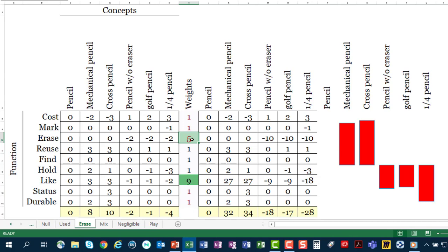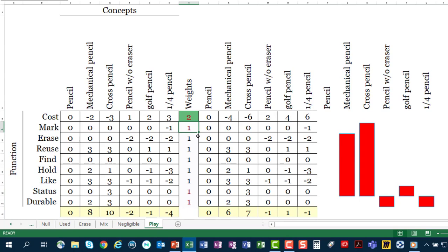But if we favor erase, we say, okay, erase is going to be a five. And I also want to like it. Well, that absolutely sends these three to the bottom because they don't have an eraser. So, that's pretty straightforward. Or let's say I want to play with these. So, I started with all the same except for cost. Let's say the most important thing is status. We know what that's going to do. That's going to bring the cross pencil makes it the most important because that's the one that gives us status.